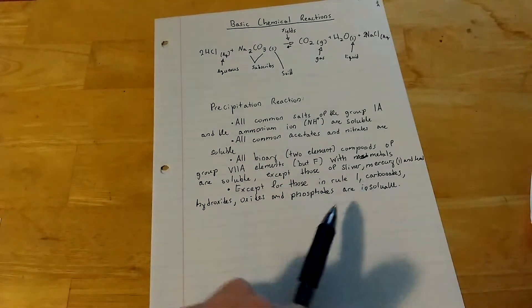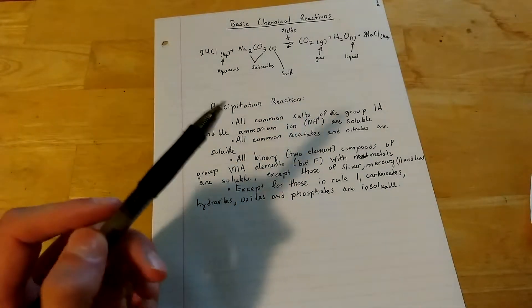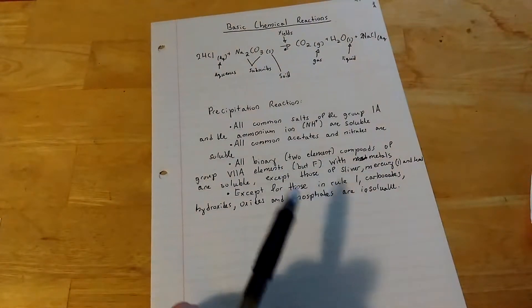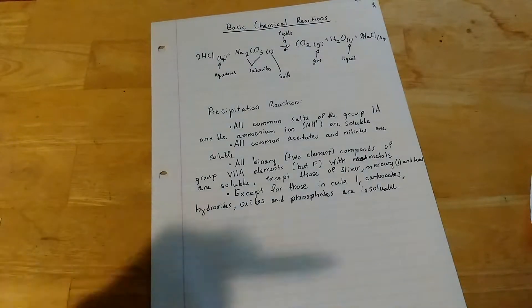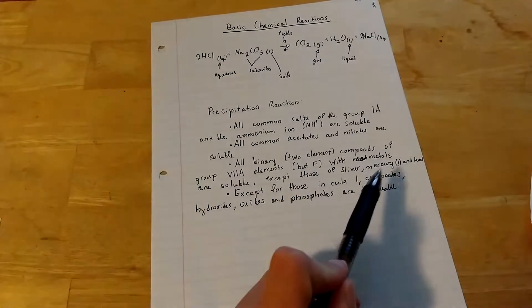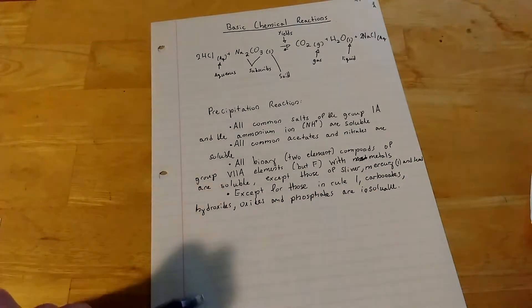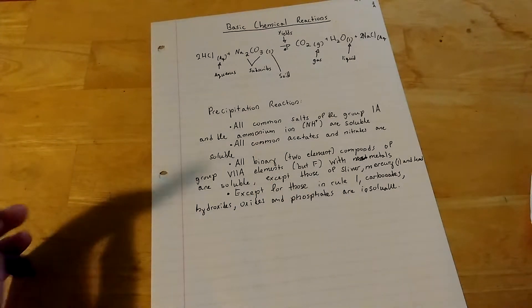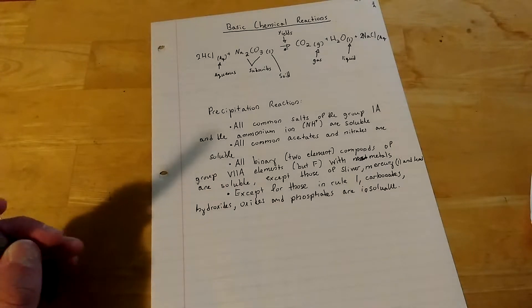With metals, so combining the compounds of group 1A with metals are soluble, except for the metals of silver, mercury 1A, and lead. Except for those in rule 1, carbonates, hydroxides, oxides, and phosphates are insoluble.